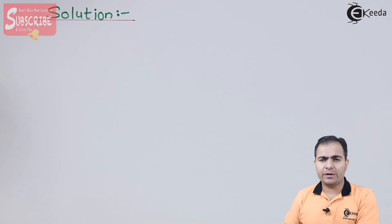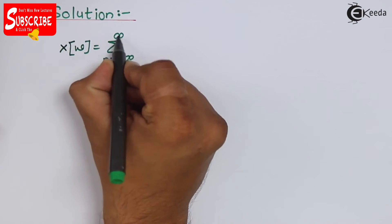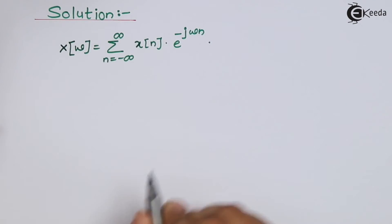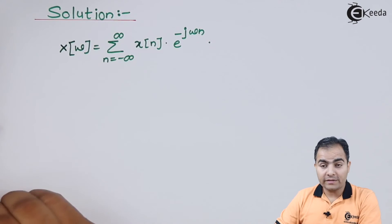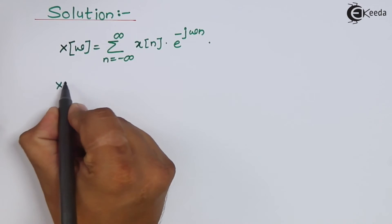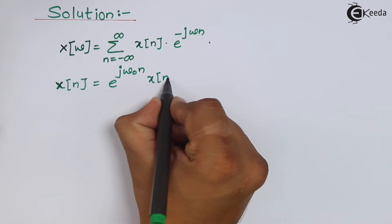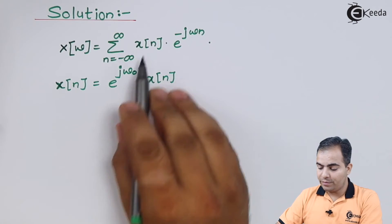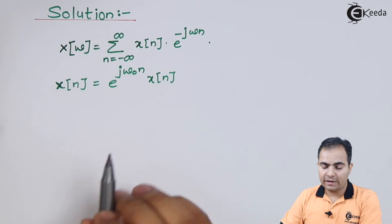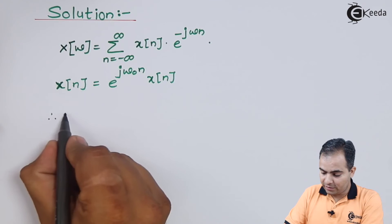First of all we'll write the definition of discrete time Fourier transform. Now, what is given in the statement: our input is e to the power j omega naught n times x of n. Therefore this input is substituted into the DTFT definition and my whole definition is now replaced accordingly.